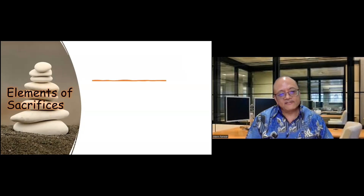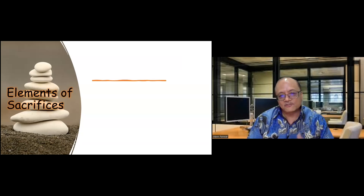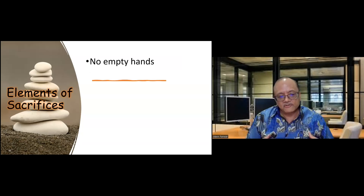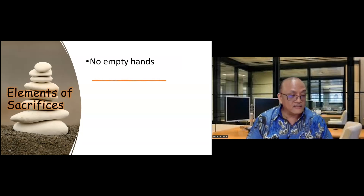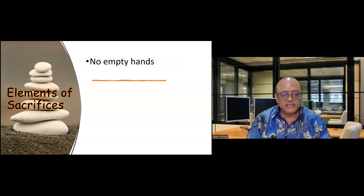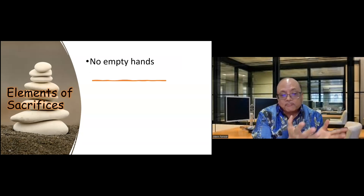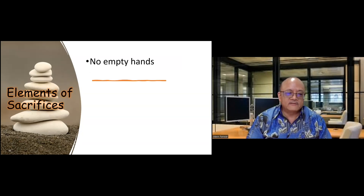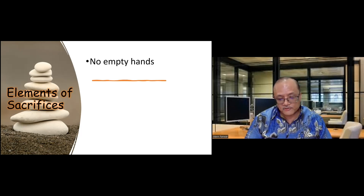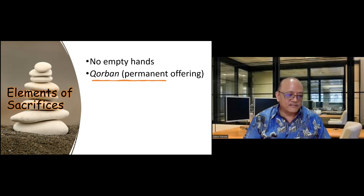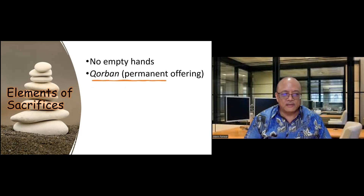When we look at the sacrifices, we need to understand the elements attached to them. The first element, missed by many churchgoers, is this: God says you cannot come into the sanctuary with empty hands. You have to bring some kind of offering — it could be a lamb, a goat, or just a handful of flour, depending on your need and status. The sacrifice was seen as the connection between God and humans, and you cannot come into his presence without that connection. The term often used is korban — an offering given to God that you cannot take back, even with regret.